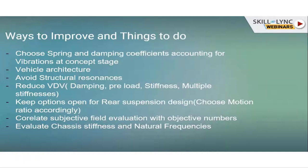A lower motion ratio — say 0.2 or 0.3 — can give higher force values to the rider. Try to keep it close to one, which is generally the case in active or regular scooters. Correlate the subjective evaluation, because people are subjectively feeling the vibrations — correlate that with objective numbers, which is very important. Then evaluate chassis stiffness and other frequencies. Chassis stiffness should play a major role and should be evaluated along with natural frequencies of the other systems.